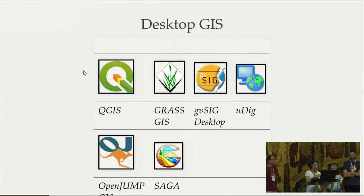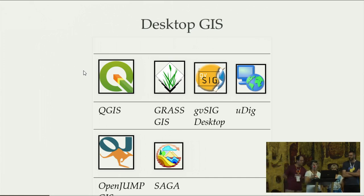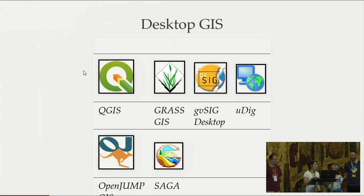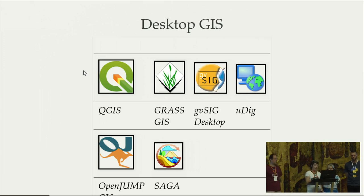Let's look at the project categories. For desktop GIS applications, you find several different projects to set up your desktop application to view, edit, and analyze your data. We had a lot of talks here about QGIS, which has a very big community. GRASS GIS celebrated its 35th birthday. And there's also gvSIG, OpenJUMP, which has been around for quite a while, and the SAGA project.